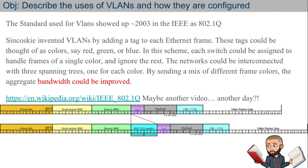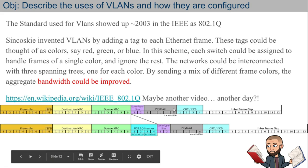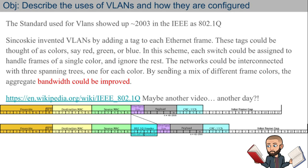So Sinkowski invented VLANs by adding a tag to each of the ethernet frames. These tags could be thought of as colors — say red, green, or blue — like the different colors that Cat cables come in. In this scheme, each switch could be assigned to handle frames of a single color and ignore the rest. The networks could be interconnected with three spanning trees, one for each color, and by sending a mix of different frame colors, the aggregate bandwidth could be improved.